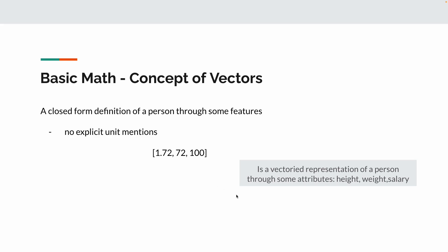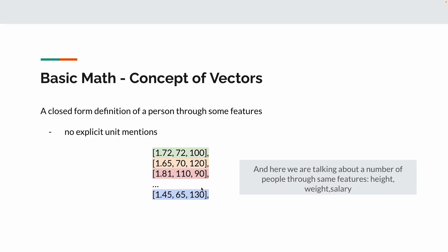A vector is representation of a person through some attributes - height, weight, and salary. Once we define that, then all the persons need to follow the same format. Here we have a few different other persons: first person, second person, and then we have few different persons. But the height should be the first column, weight should be the second column, and salary should be the third column. That is the simplified definition of vector in our case.